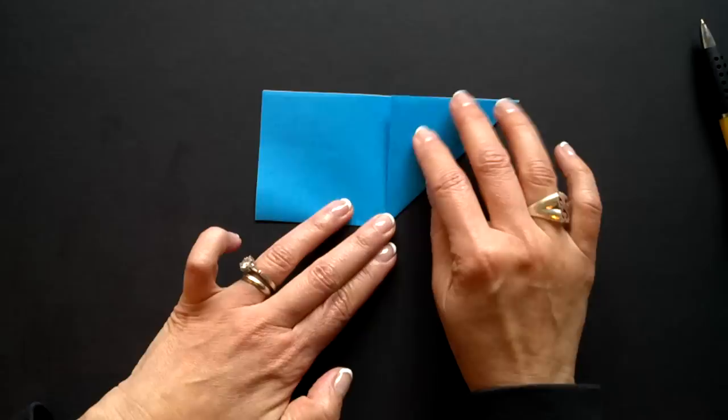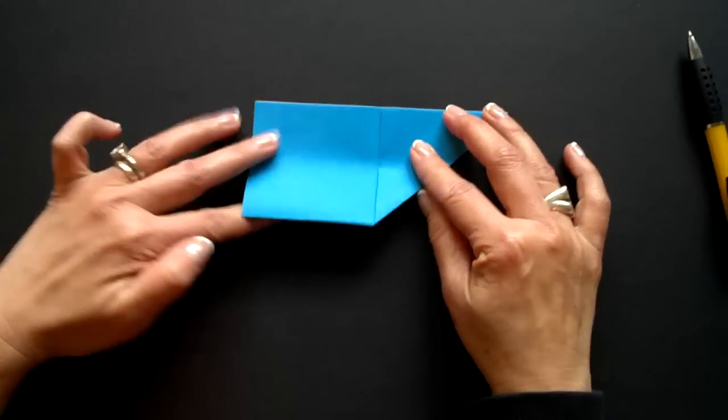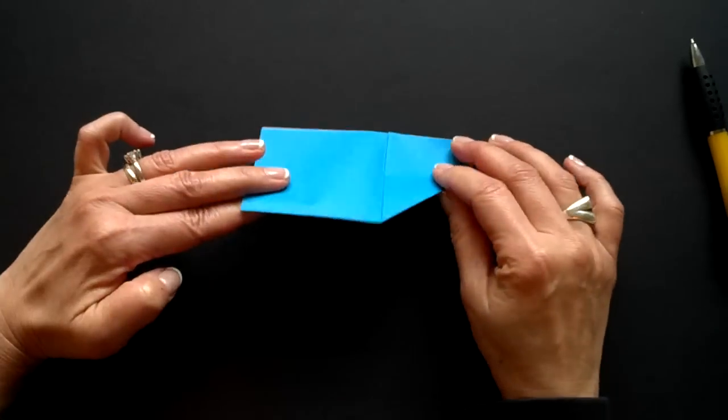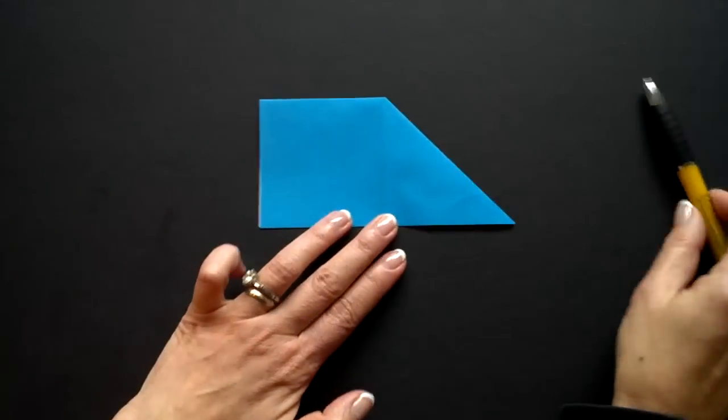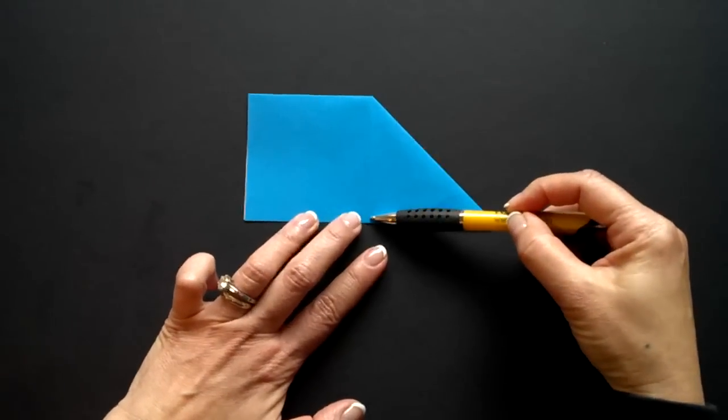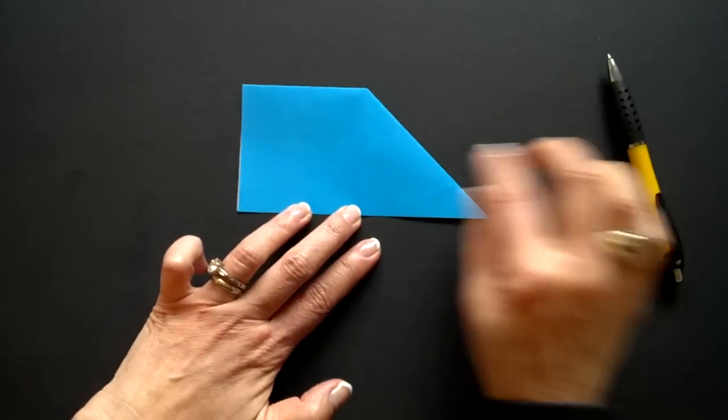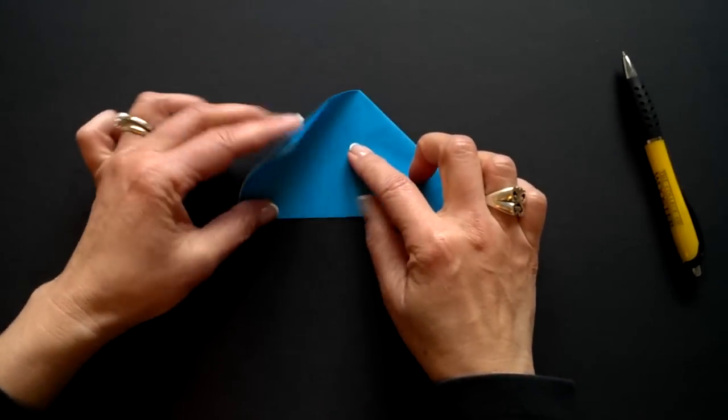Now we're going to turn the paper over, strictly flipping from the bottom to the top. This corner is going to be folded down to this point, like so.